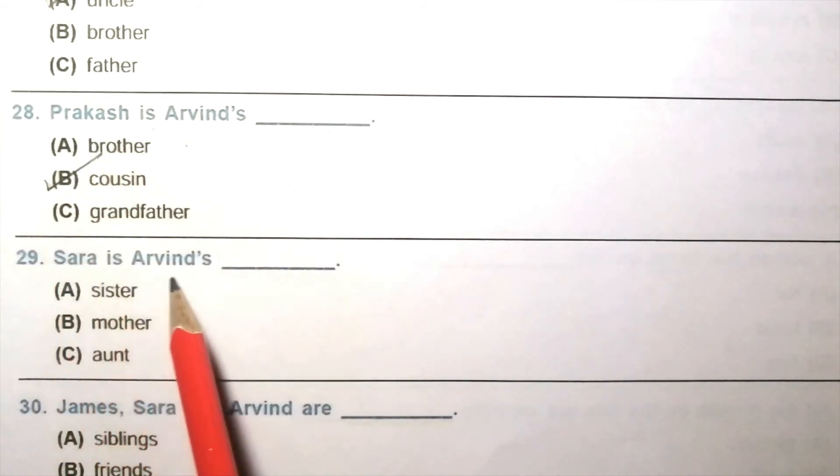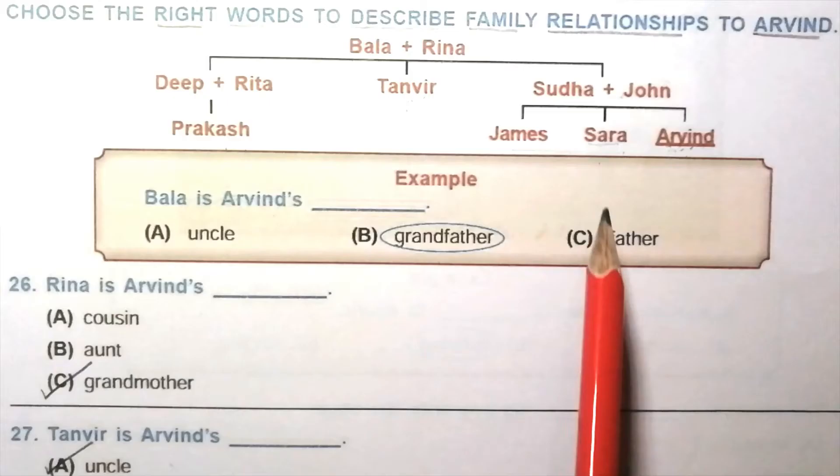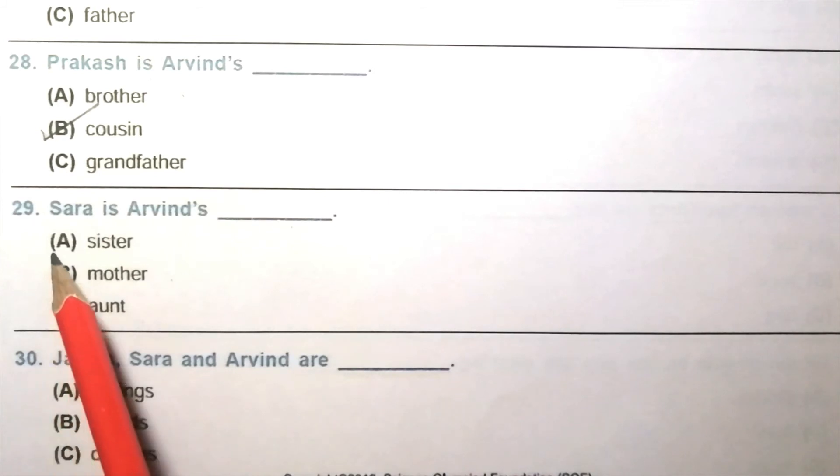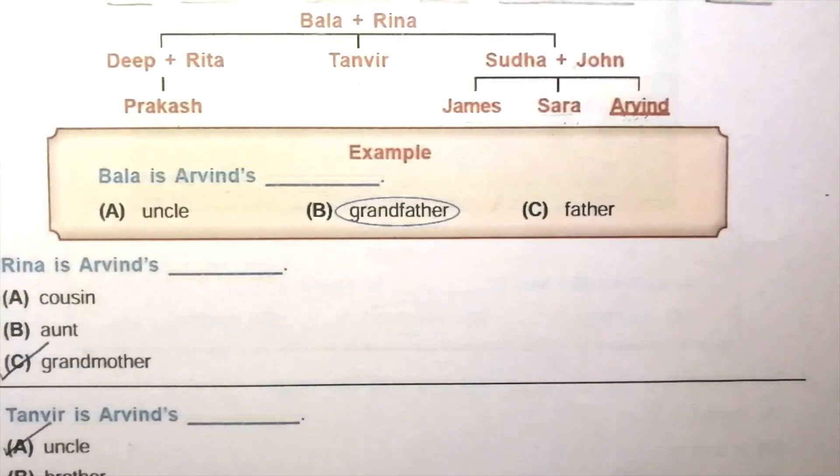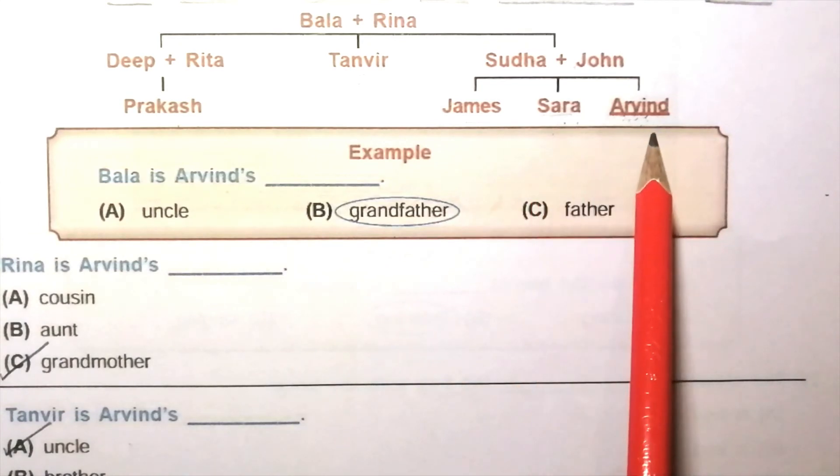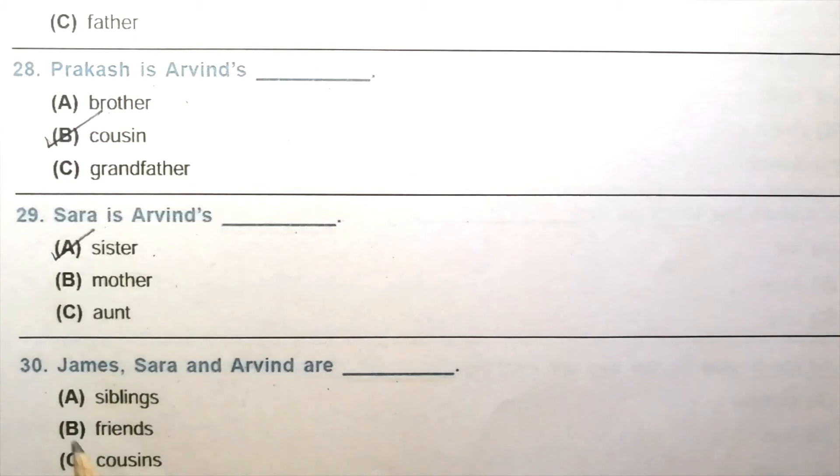Question 29: Sara is Arvind's blank. Sister, mother, aunt. So Sara is Arvind's sister. The answer is A, sister. Question 30: James, Sara and Arvind are blank. Siblings, friends, cousins. James, Sara and Arvind are siblings. So the answer is A, siblings.